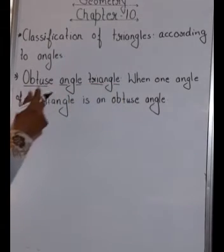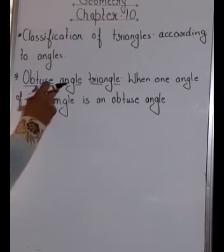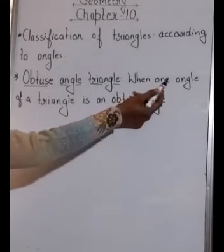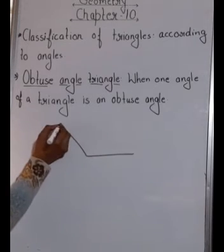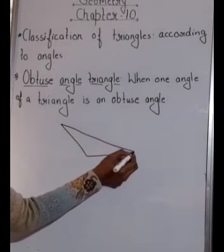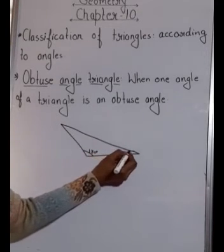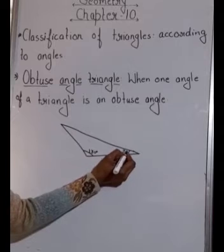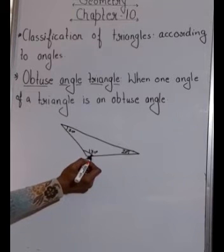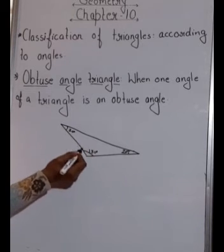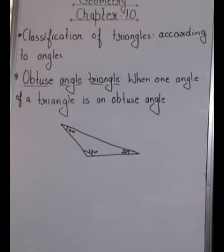The third type is the obtuse angle triangle. An obtuse angle is greater than 90 degrees but less than 180 degrees. If a triangle has angles of 130°, 20°, and 30°, you can see one angle is obtuse. When one angle of a triangle is an obtuse angle, the triangle is called an obtuse angle triangle.